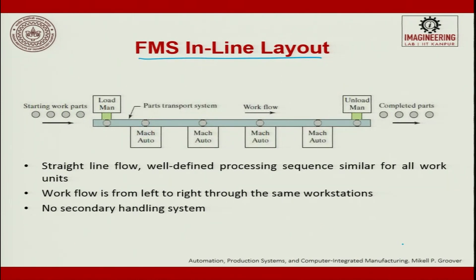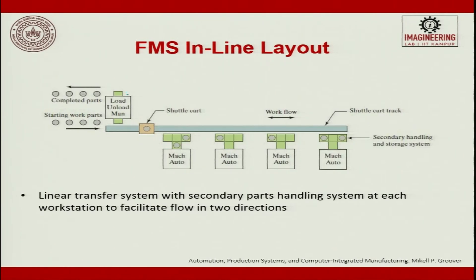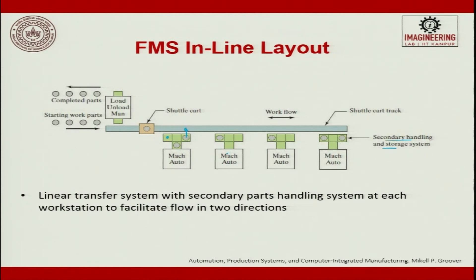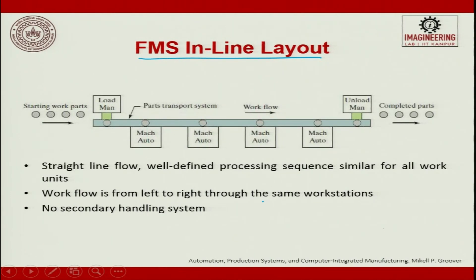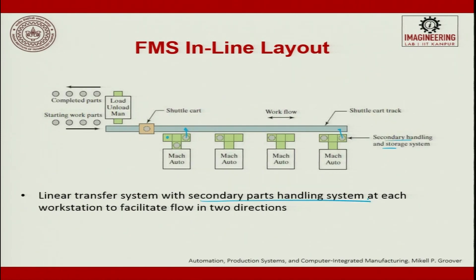In the inline layout, a loading and unloading station can be combined at one place. A shuttle cart moves in the conveyor or shuttle cart track. Automated machines are served by secondary handling and storage buffers. One shuttle takes finished parts to unloading while loading happens at the other end. A linear transfer system with secondary part handling at each workstation facilitates flow in both directions. The FMS inline layout with integrated storage system adds a part storage area where machined parts are stored, and the shuttle retrieves them to maximize machine utilization.